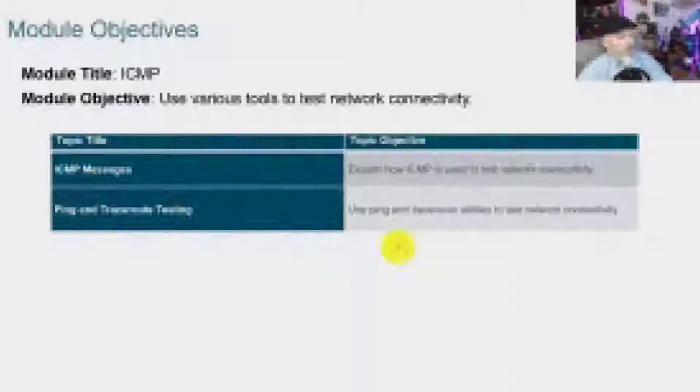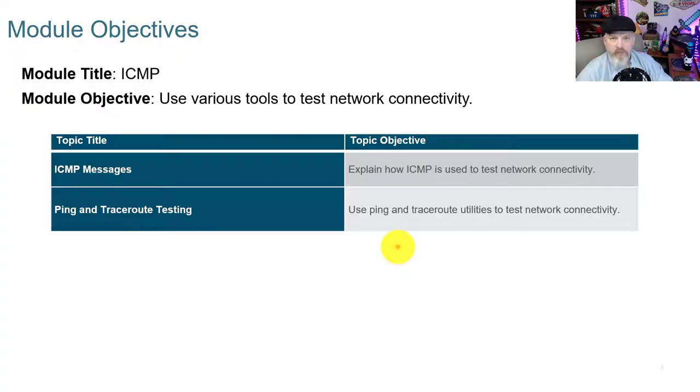This video is Module 13 in the Intro to Networks video series for the Cisco Networking Academy. This video covers ICMP, with objectives focusing on ICMP messages and ping and traceroute testing.